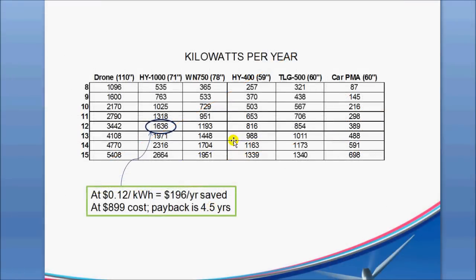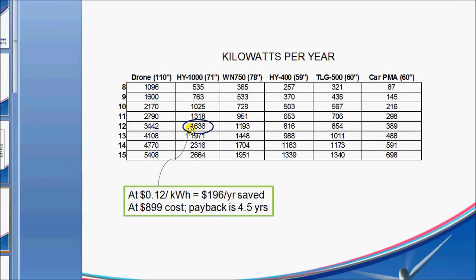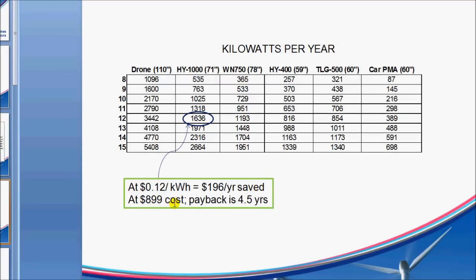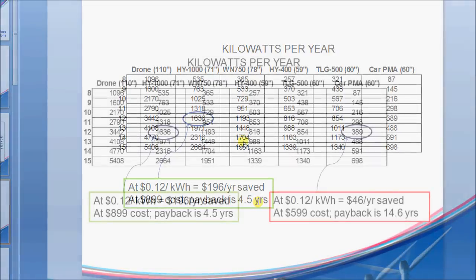Now if I go back to the table here, just kind of put some numbers against this. Let's say that we have this Windmax 1000 generating at 12 miles an hour, generating 1636 kilowatt hours a year. Let's say we're paying 12 cents per kilowatt hour. That would be equivalent to about $196 per year saved. And then if you paid $899 for the turbine, the payback for the turbine would be about 4.5 years.